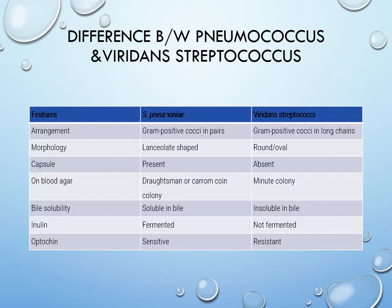The viridans streptococci are insoluble in bile. Another differentiating test is inulin fermentation, which is positive for S. pneumoniae. Optochin sensitivity also differentiates them: S. pneumoniae is sensitive to the optochin disc. When we inoculate the bacteria on blood agar and place an optochin disc, a zone of inhibition indicates sensitivity. No zone of inhibition indicates resistance.